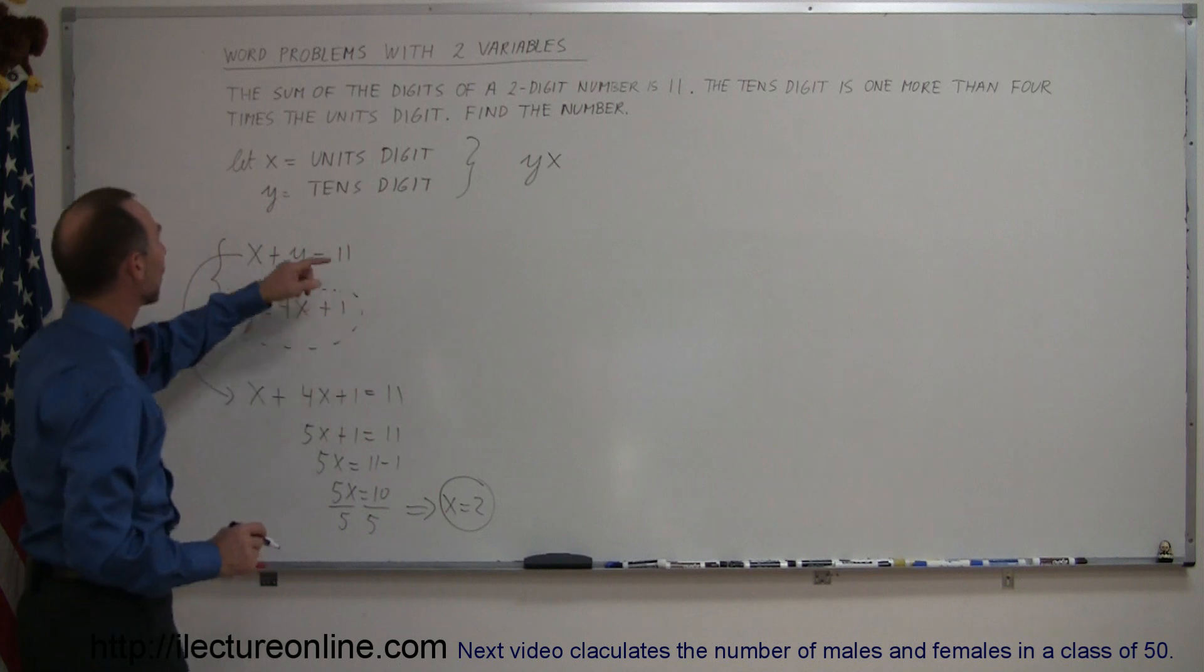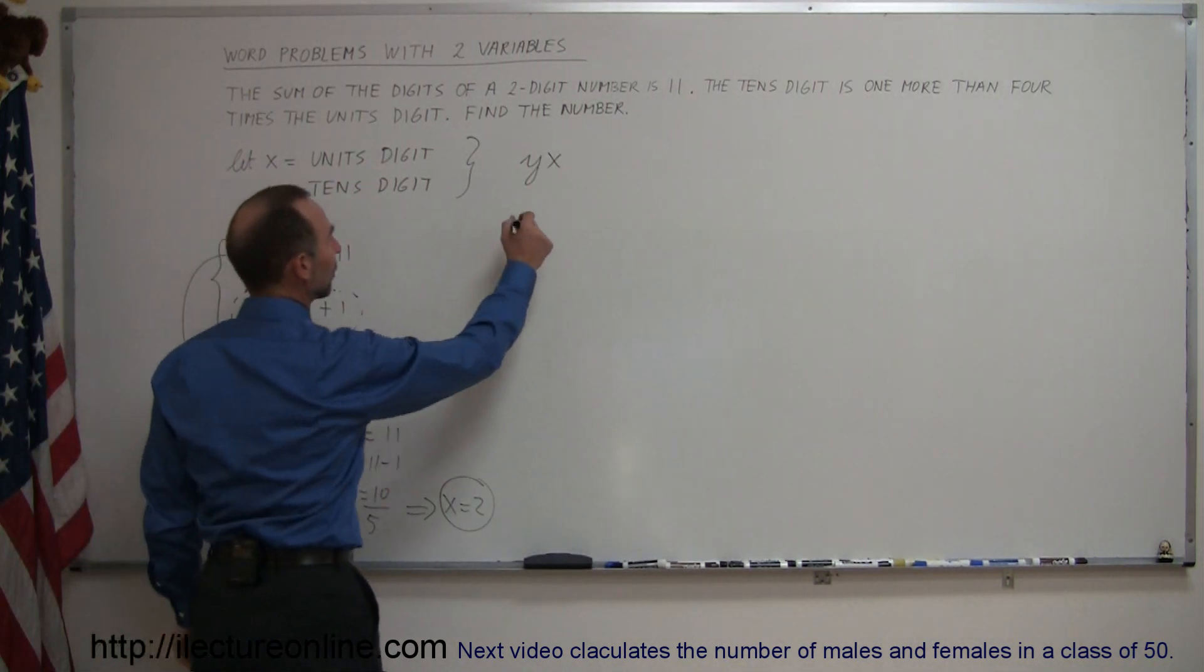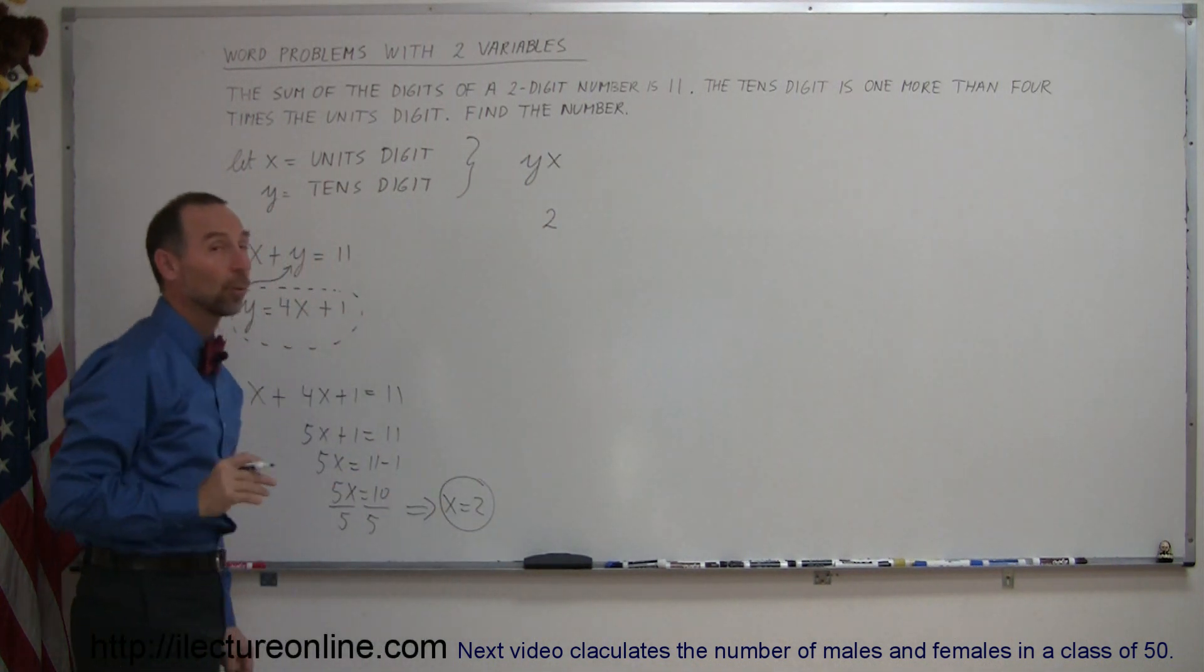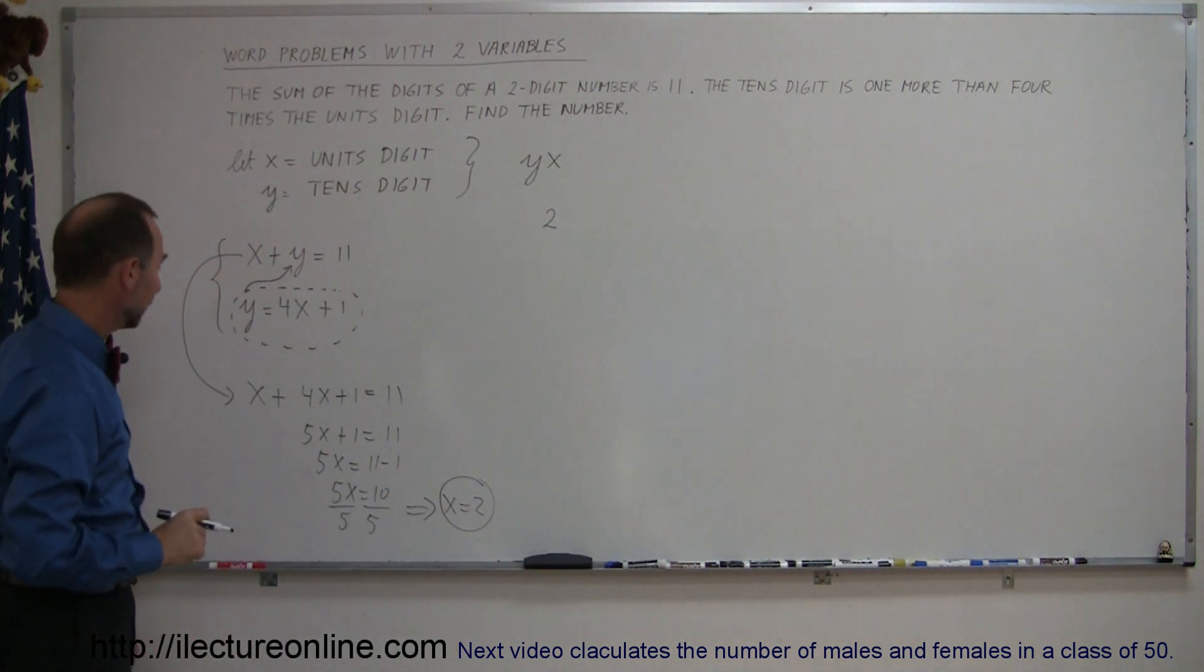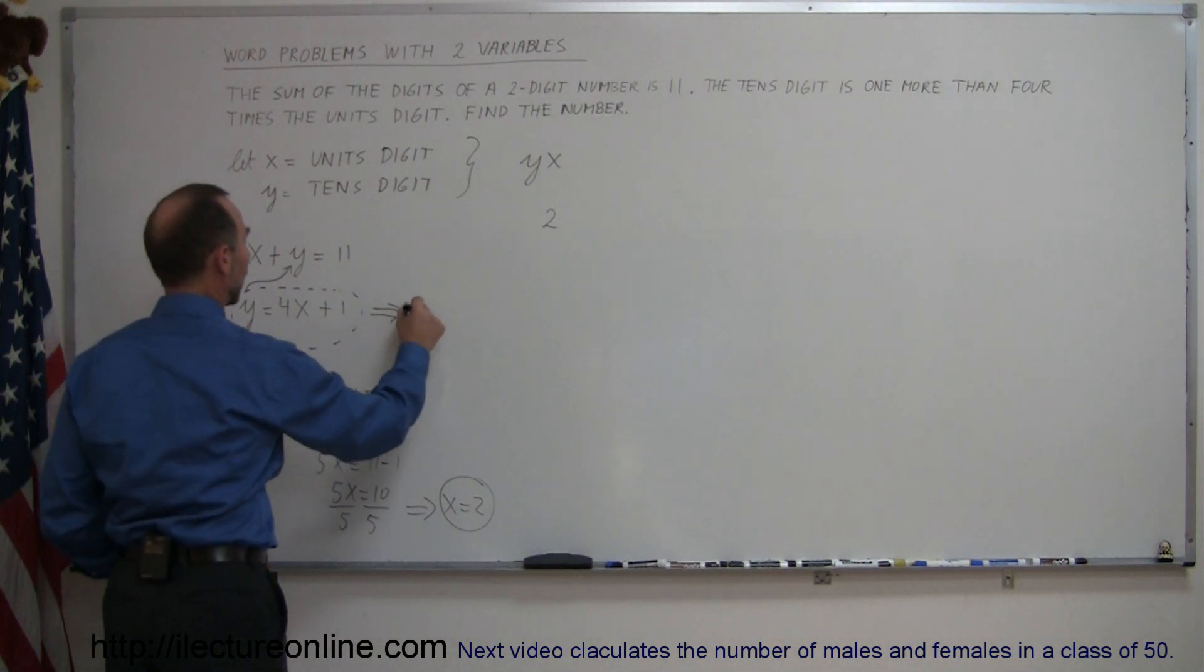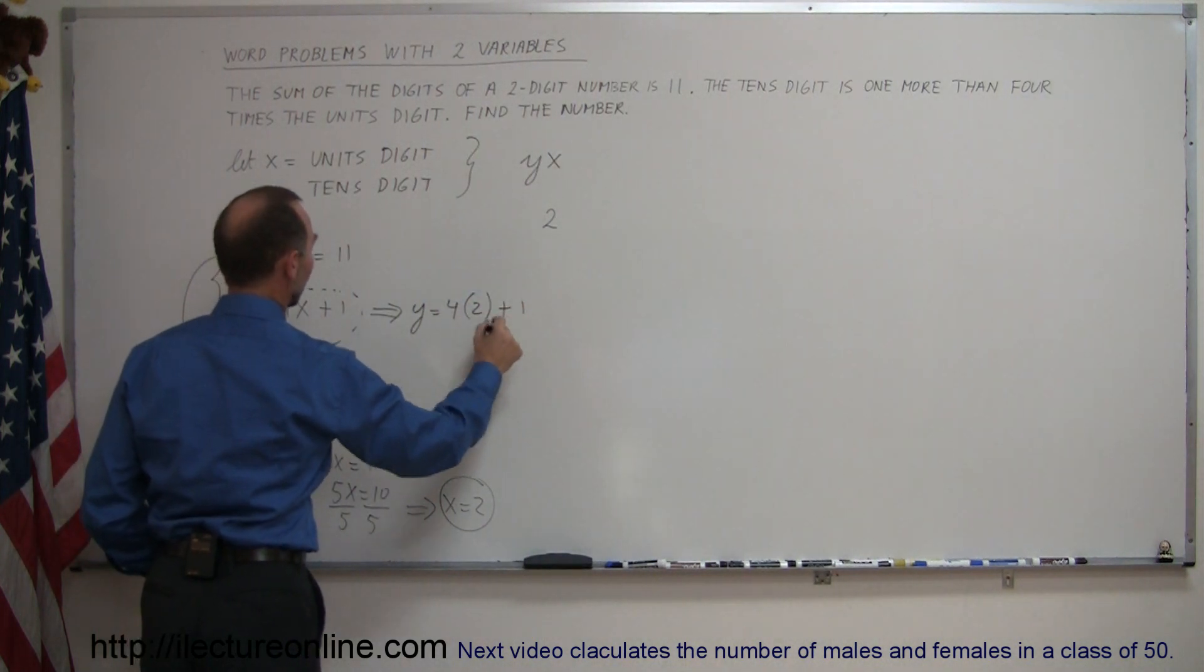Then we go back to what x represented. It represented the units digit, so the number then becomes 2 in the units digit. We still have to figure out what the y is equal to. Well, we can go back to one of our equations right here, this one right here. And we can say that y is equal to 4 times the units digit, which is 2 plus 1, or y is equal to 9.